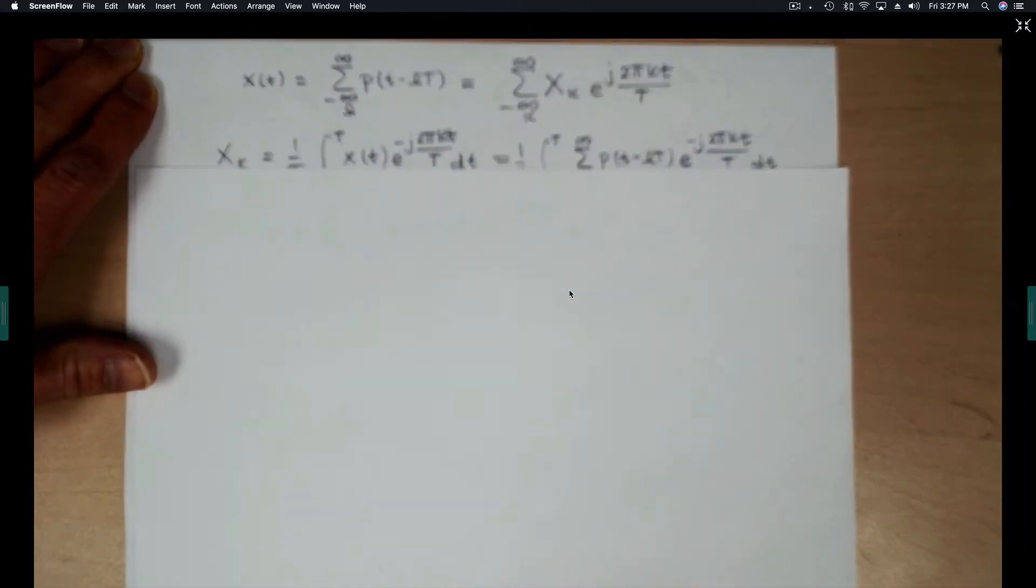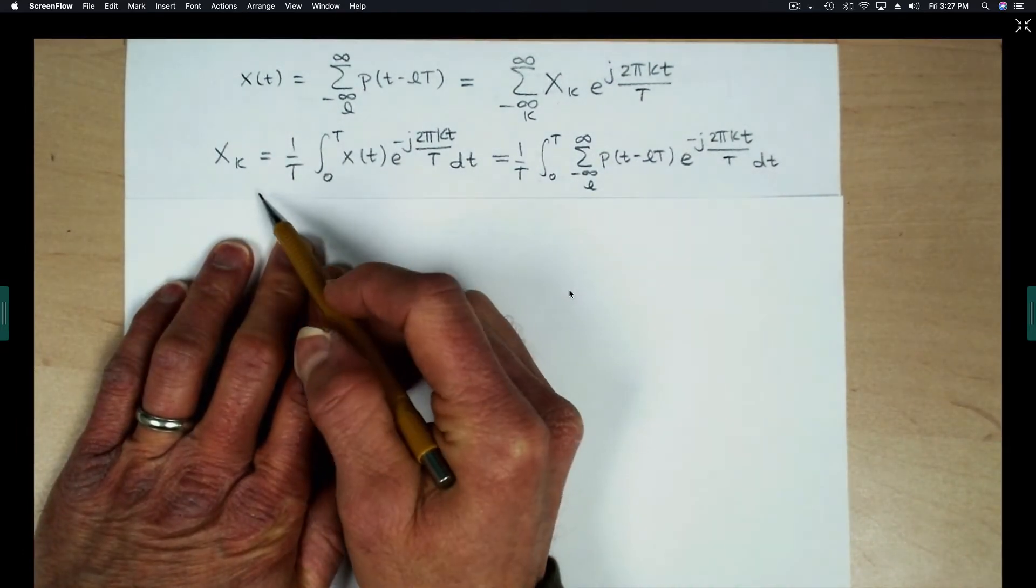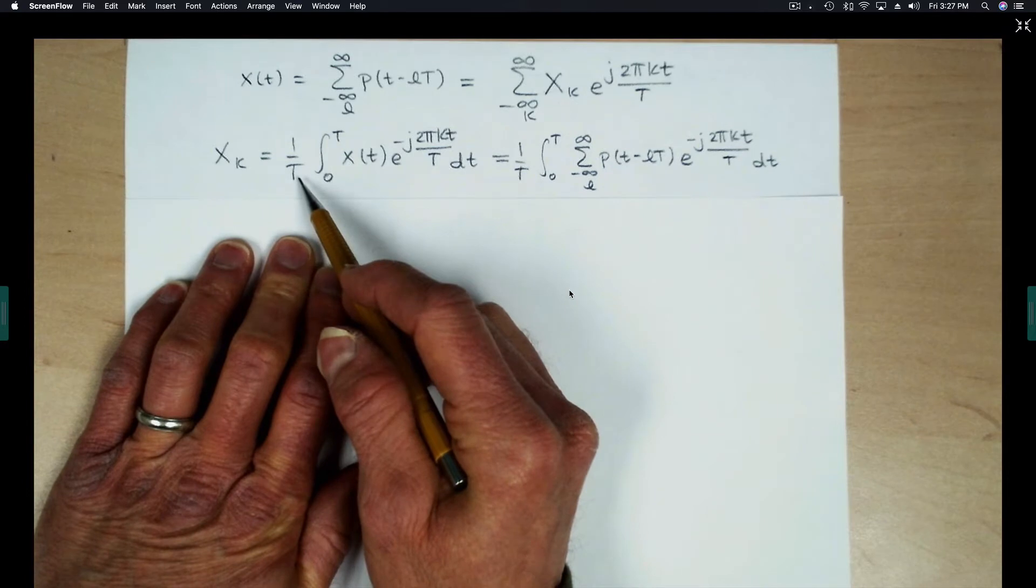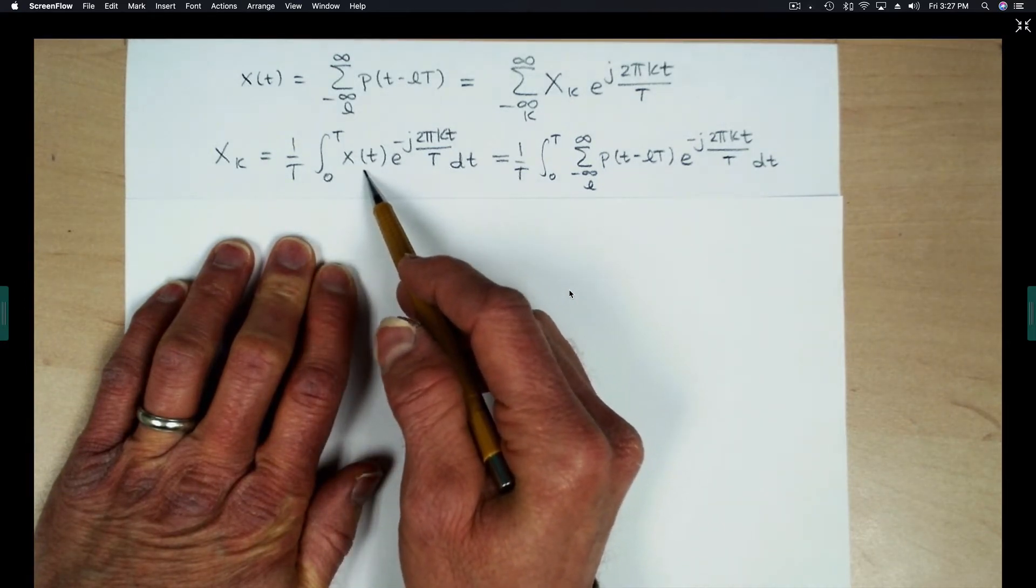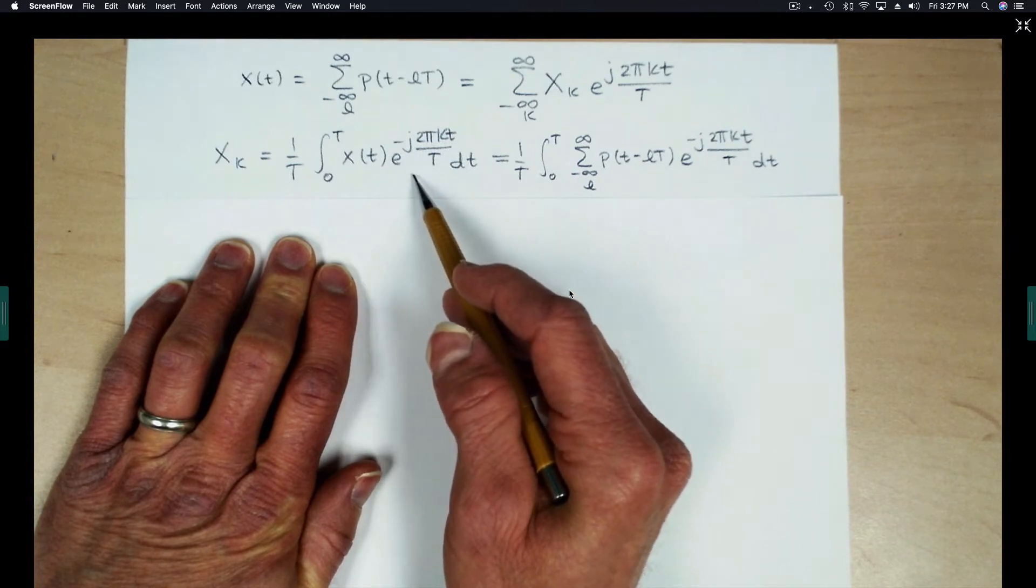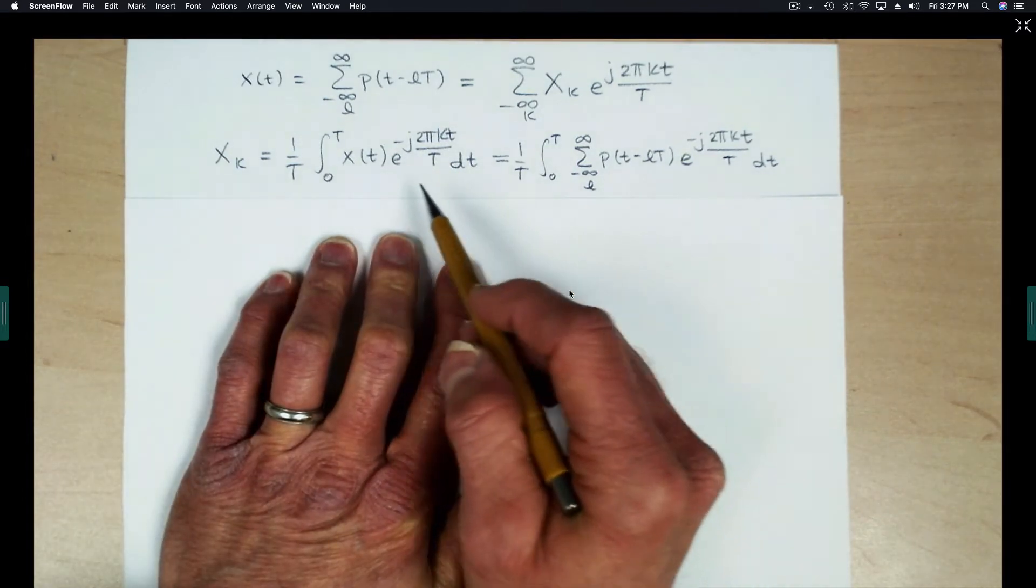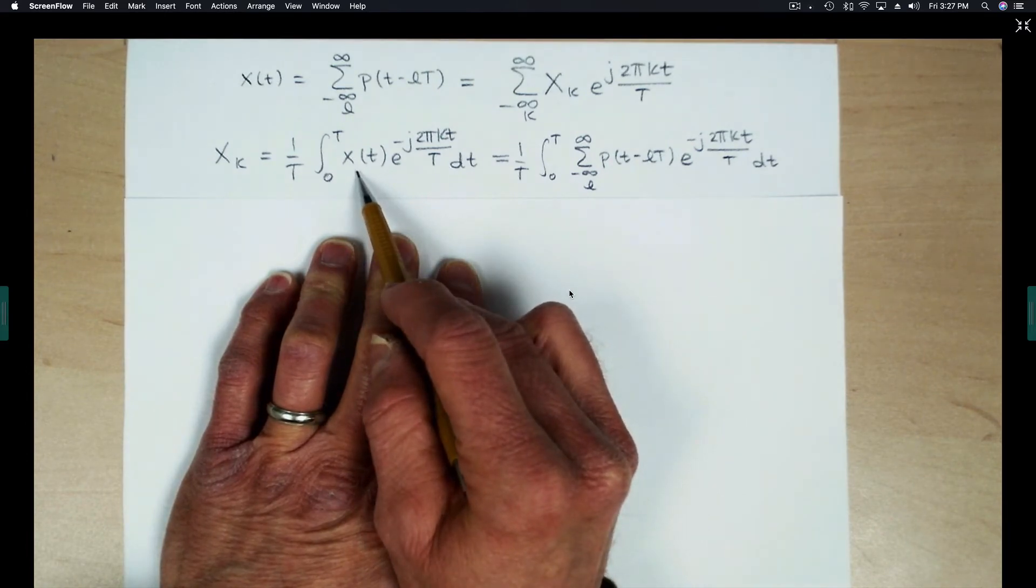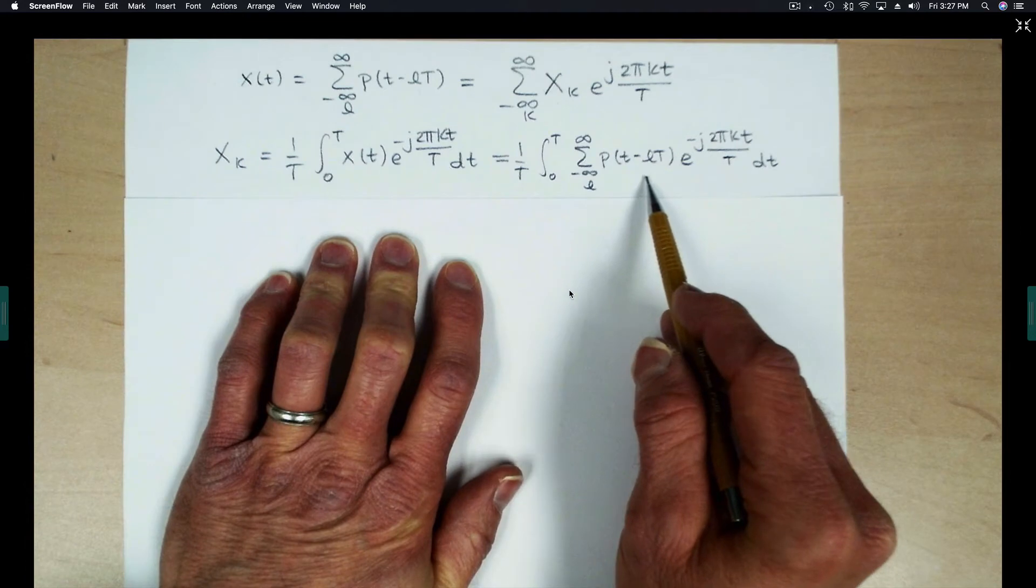I've written down the definition of the Fourier series coefficients. It is the integral, 1 over T, times the integral over one period of the function times this complex exponential. And then I've also substituted for x of T this pulse train, as you see here.